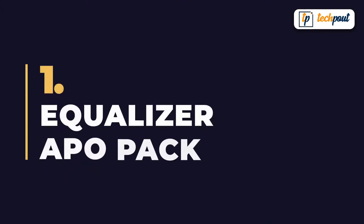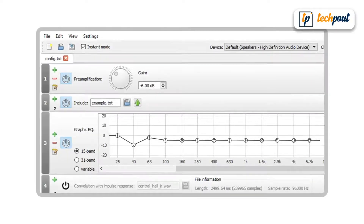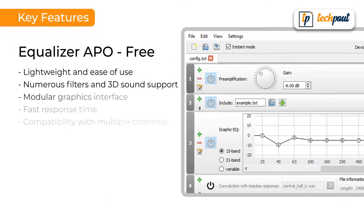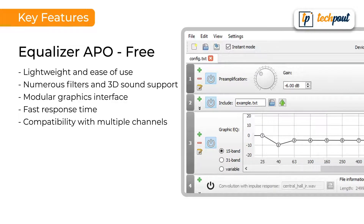First on our list of best sound equalizers is Equalizer APO. This application is packed with many awesome features. Some of the most notable ones include lightweight and ease of use, numerous filters and 3D sound support, modular graphics interface, fast response time, and compatibility with multiple channels.